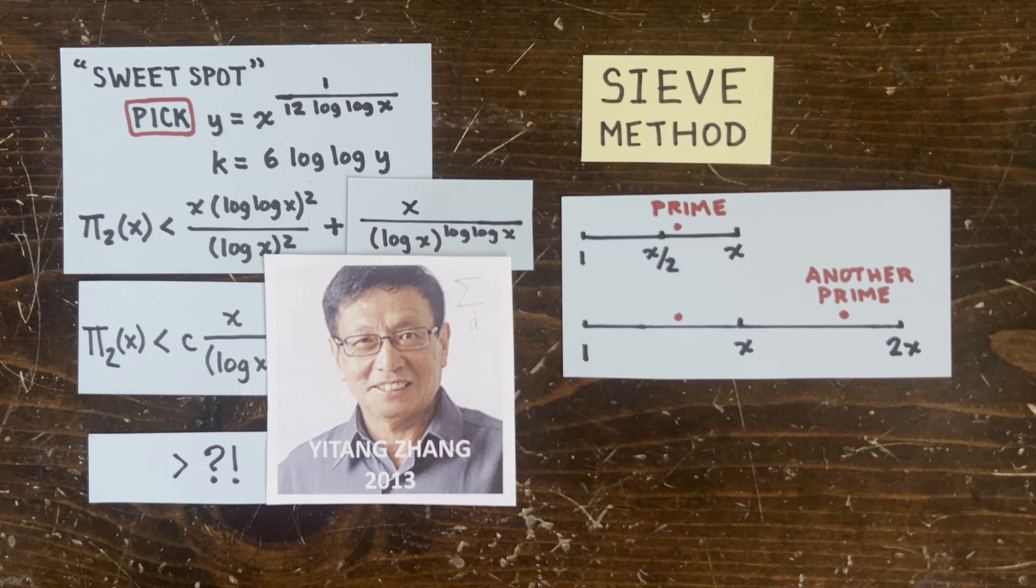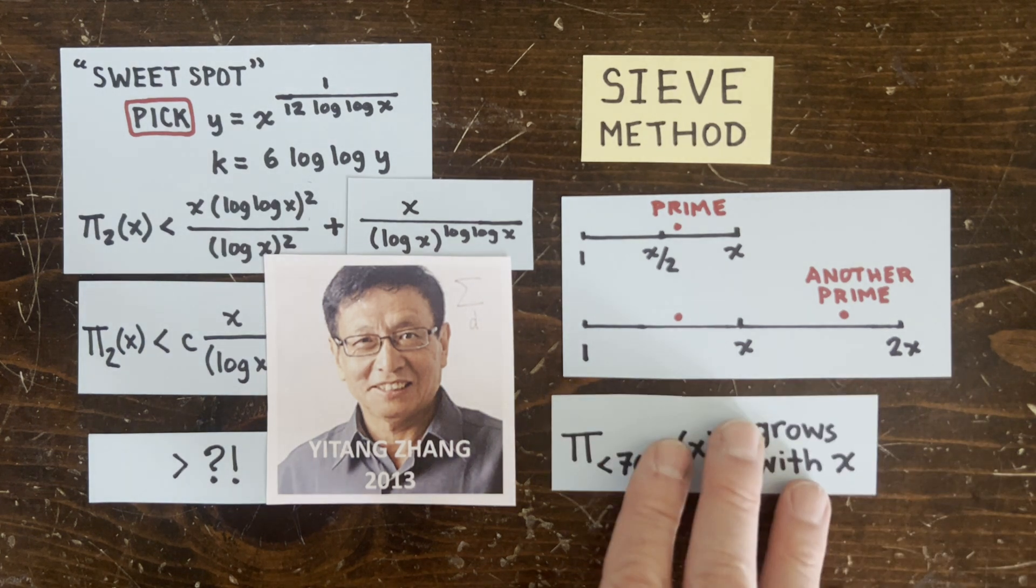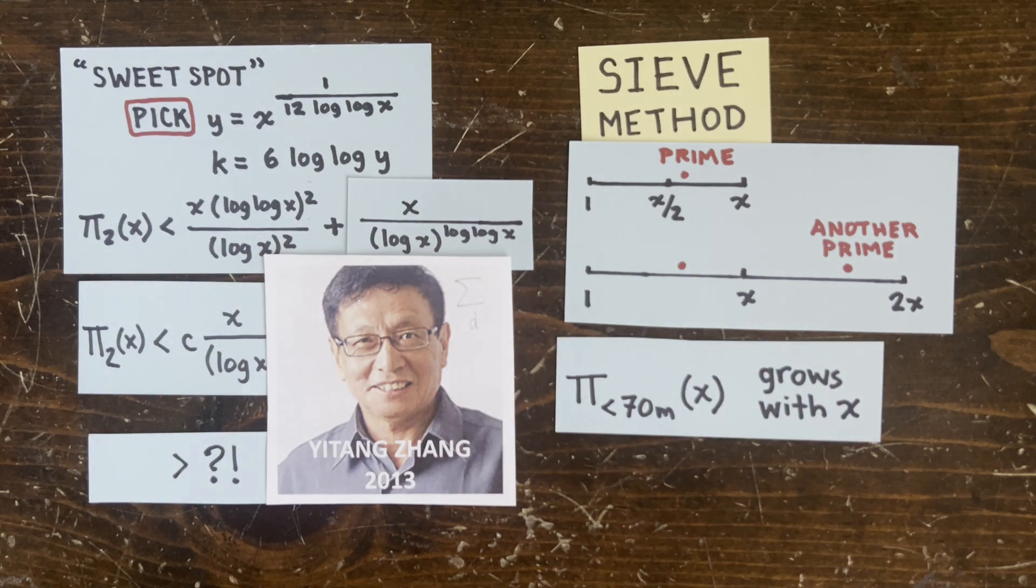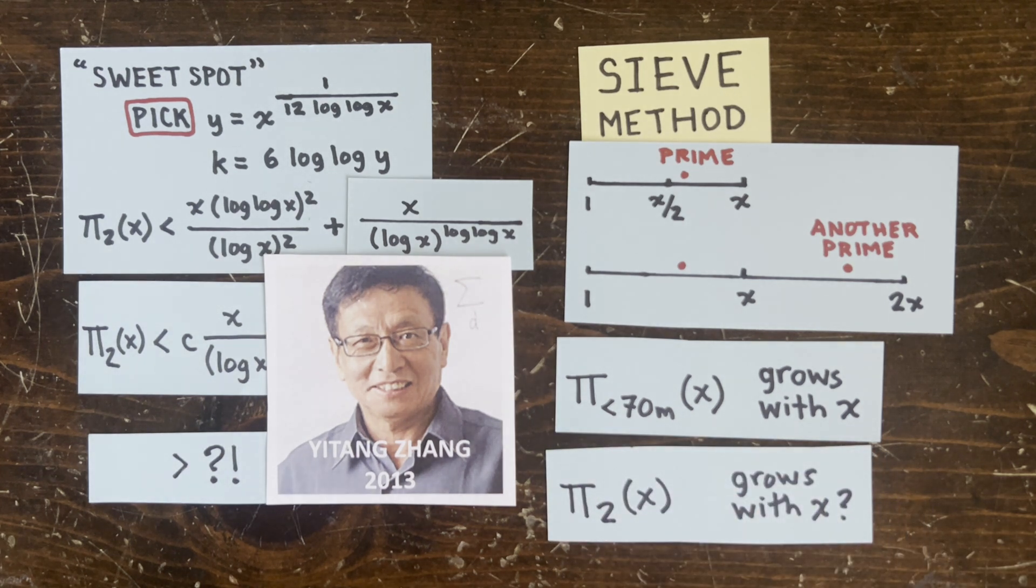who made advances in sieve technology to the point where he could say there's an infinite number of primes less than 70 million apart. So the number of such pairs grows with x. Though Zhang's method didn't say how quickly. So maybe a future mathematician will say. And maybe another future mathematician will give a similar result to prove the twin prime conjecture.